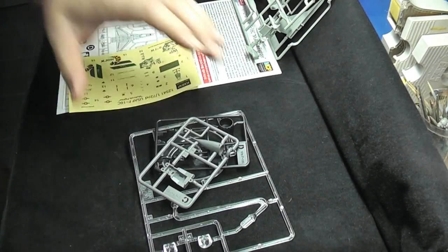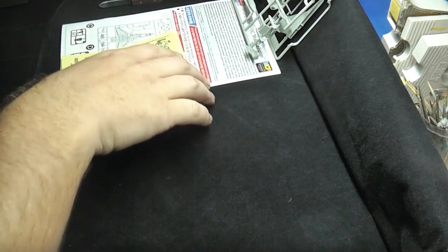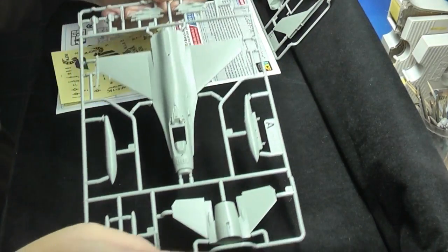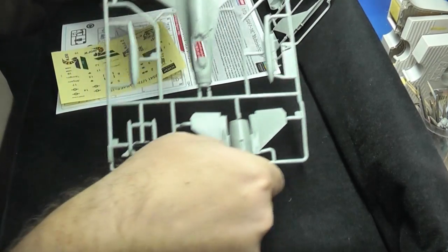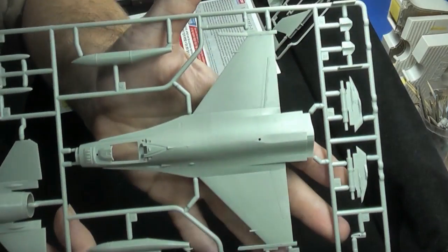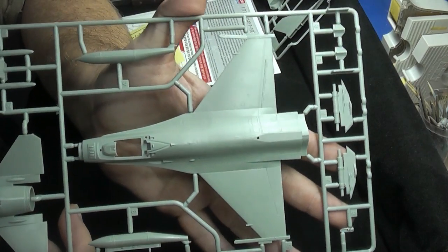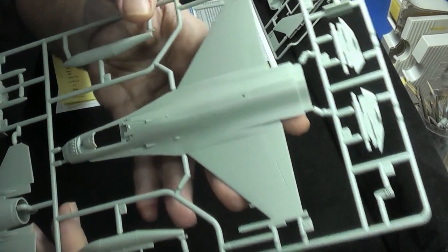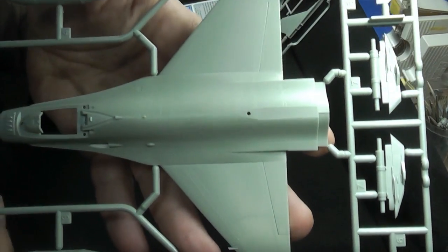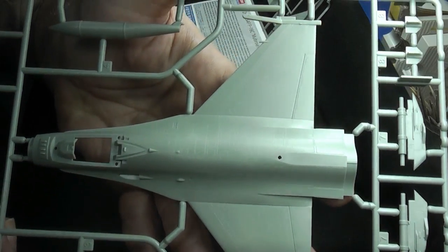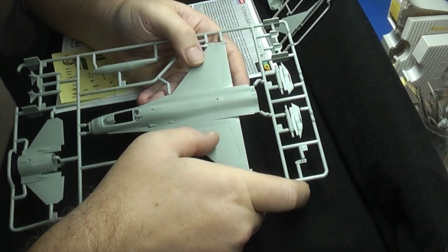I'll give you a quick look at what it is and I'll explain what I'm going to do with it. So here we've got the sprues, and basically, like I said, it's 1/72, so it's a decent size, but actually the detail, I hope you can see that on the camera, the surface detail is actually really, really good.